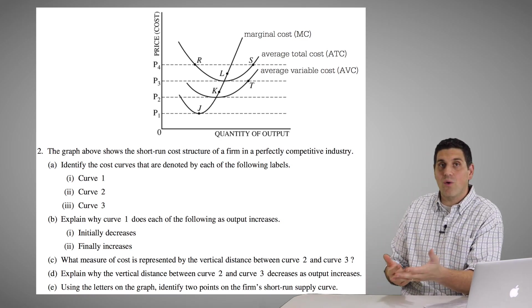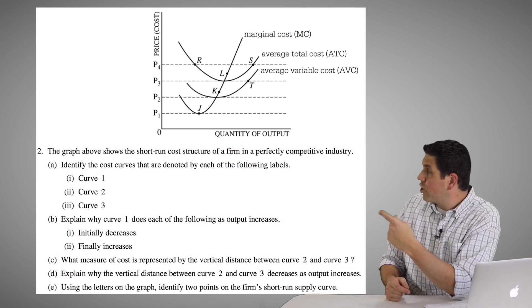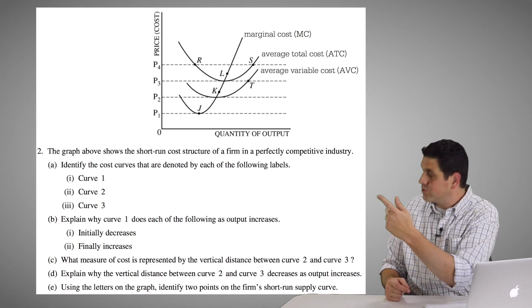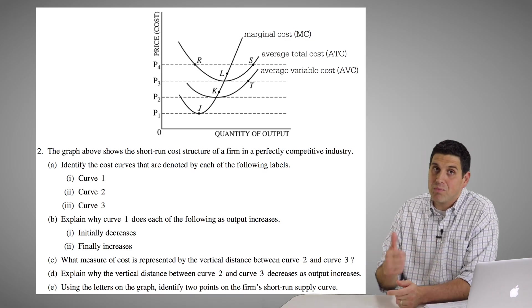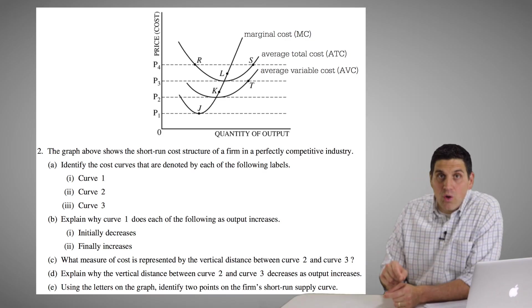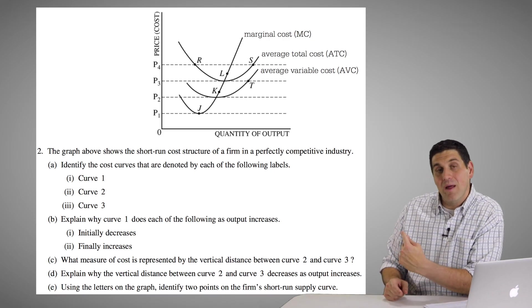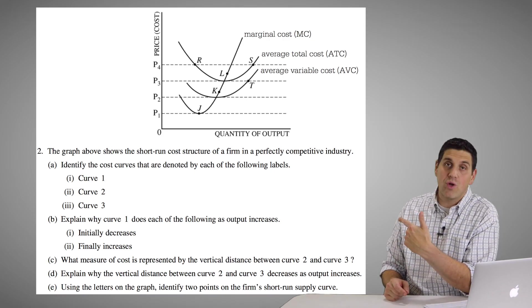But why not explain it since we're here? So the marginal cost you knew was curve one because marginal cost always goes down and up for reasons you'll explain in part B. The average total cost goes down, hits a minimum, and then goes back up. And so that was average total cost.